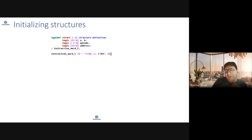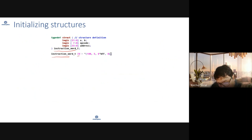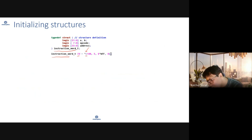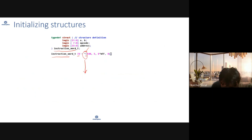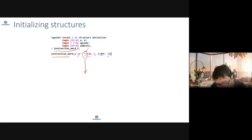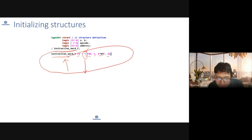To initialize a structure — for example, a structure named instruction_word_t called instruction — initialization can be done using the tick-curly-brace operator. Don't confuse it with the concatenation operator; this is a specialized operator: tick followed by curly braces. Inside, you provide values for each member of the structure in comma-separated format. This is used when you want to completely initialize all elements of a structure.